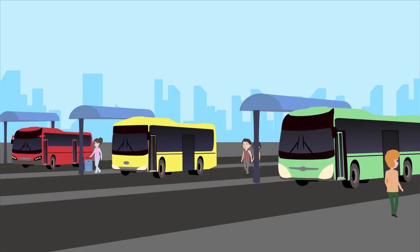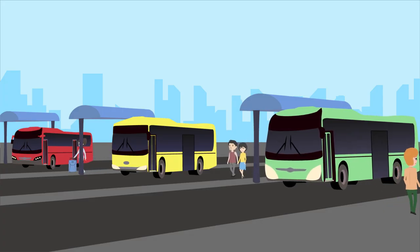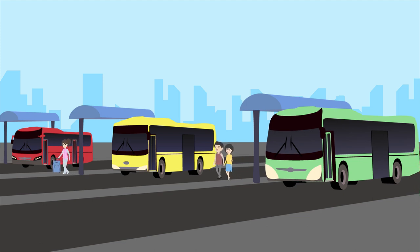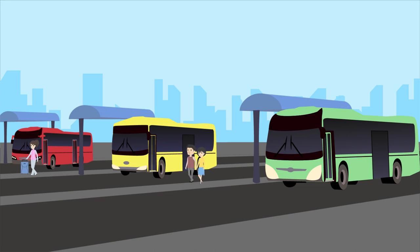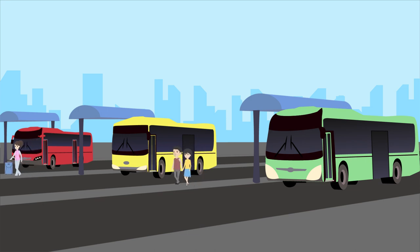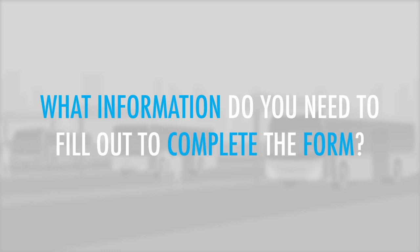You've just gotten off a plane and are walking through the bus terminal of the airport. There's a stall where you can exchange money at the bus terminal. You attempt to do so, but the staff member first hands you a form to fill out instead. What information do you need to fill out to complete the form?